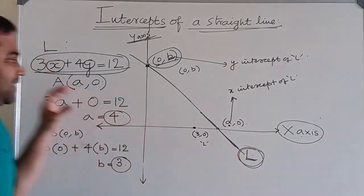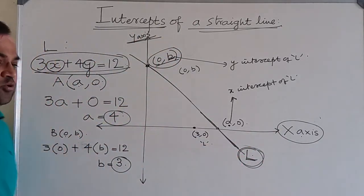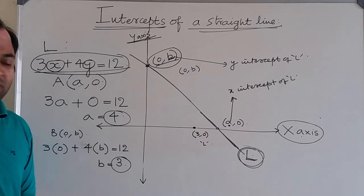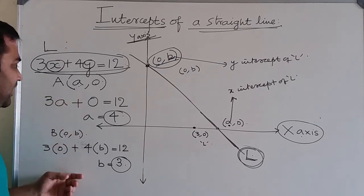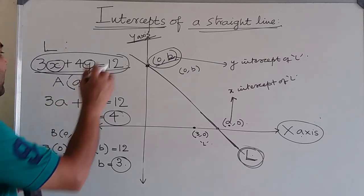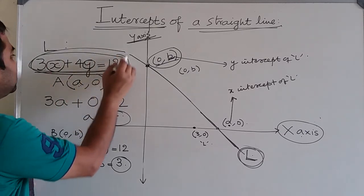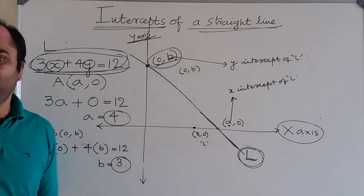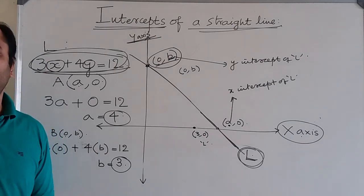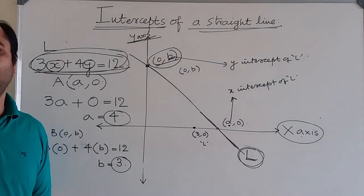So this is what x and y-intercepts of a straight line mean, and the method to determine the x and y-intercepts of a line when its equation is given. Thank you for watching this video. Please subscribe and like our videos.